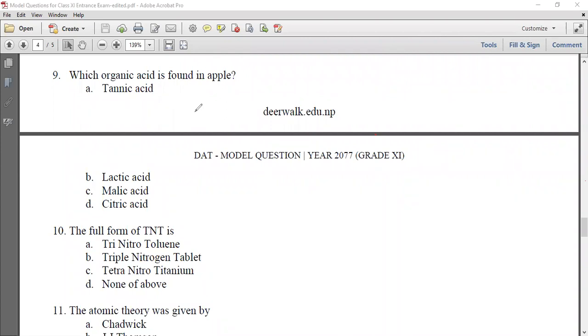Which organic acid is found in apple? Apple is found in organic acid, tannic acid, lactic acid, malic acid, citric acid. Normally, lactic acid is found in milk. And apple contains malic acid. Citric acid is found in citrus fruits like lemon and pomelo.